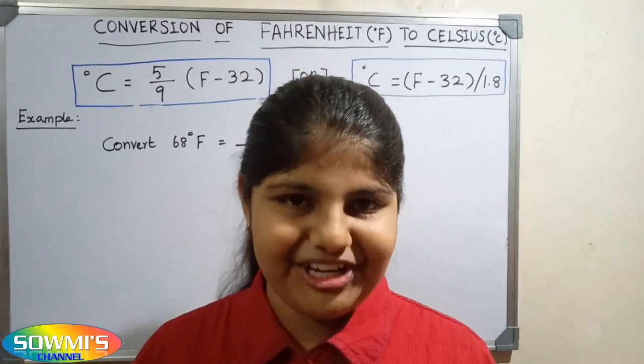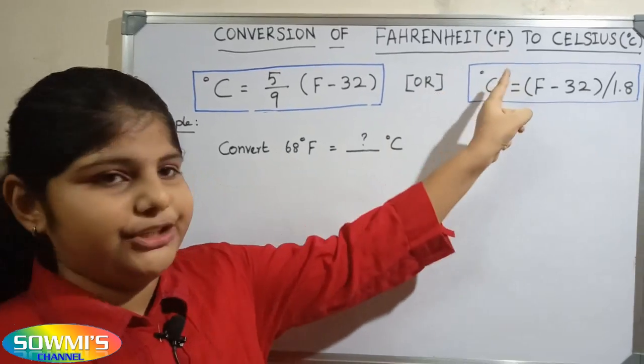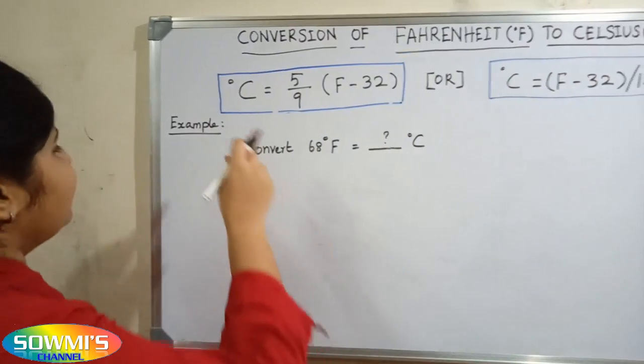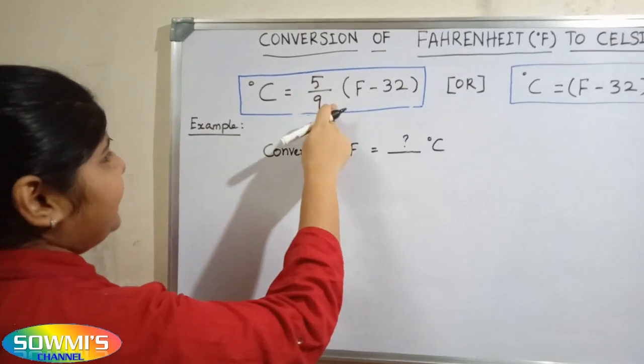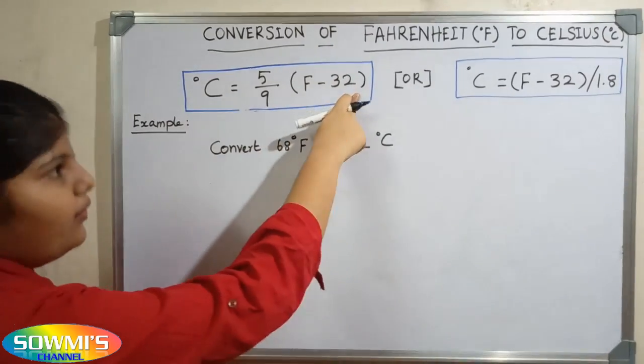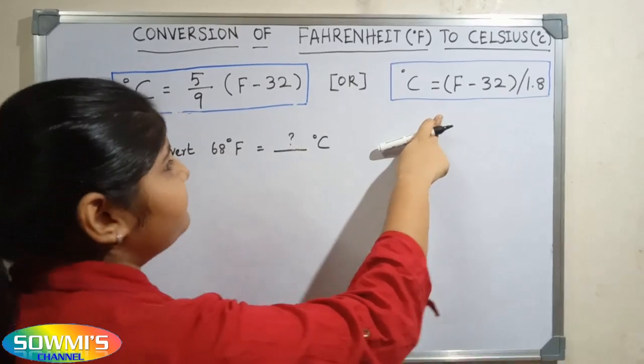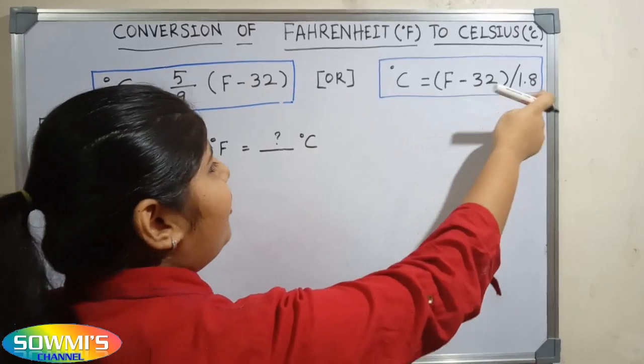Hi friends, in this video we are going to see conversion of degree Fahrenheit into degree Celsius. Formula is degree Celsius equals 5 by 9 multiply Fahrenheit minus 32, or degree Celsius equals Fahrenheit minus 32 divided by 1.8.